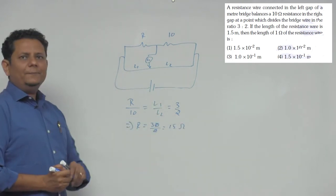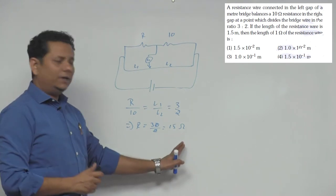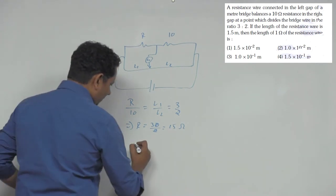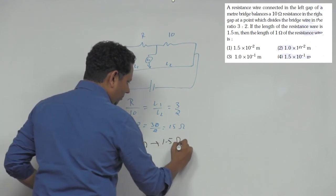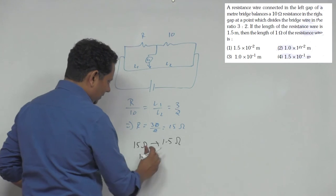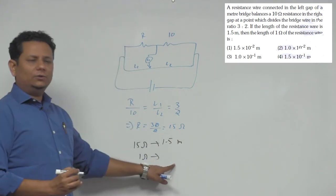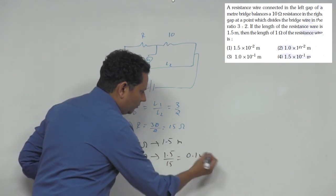Now, next step here is length of resistance wire 1.5 meter. So if you say 15 ohm is 1.5 meter, so this will be simple, 1.5 divided by 15, so this is 0.1.